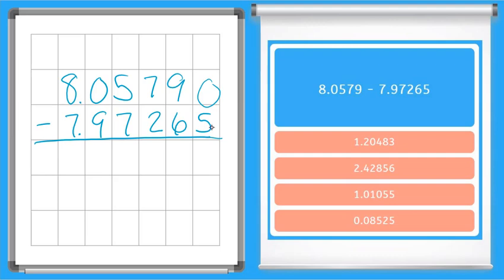So 5 taken away from zero. We cannot do that so we need to borrow. 9 will become an 8 and that makes this a 10. 10 minus 5 is 5. 8 minus 6 is 2. 7 minus 2 is 5. 5 minus 7.